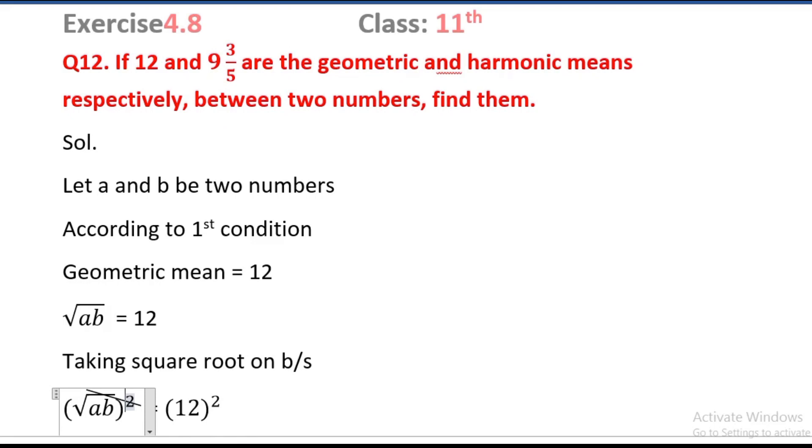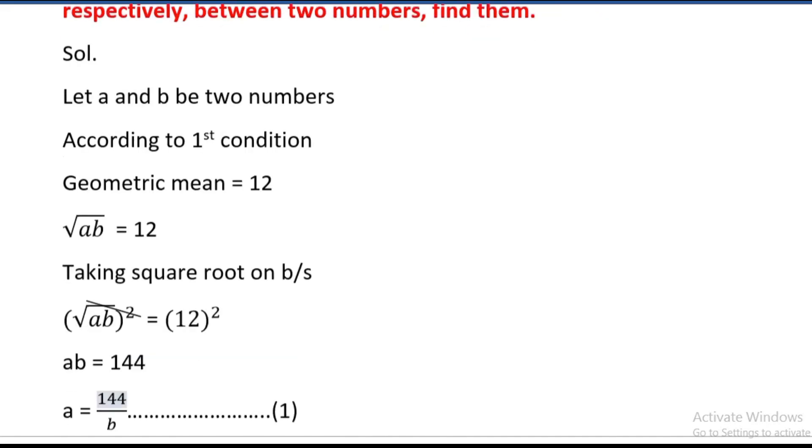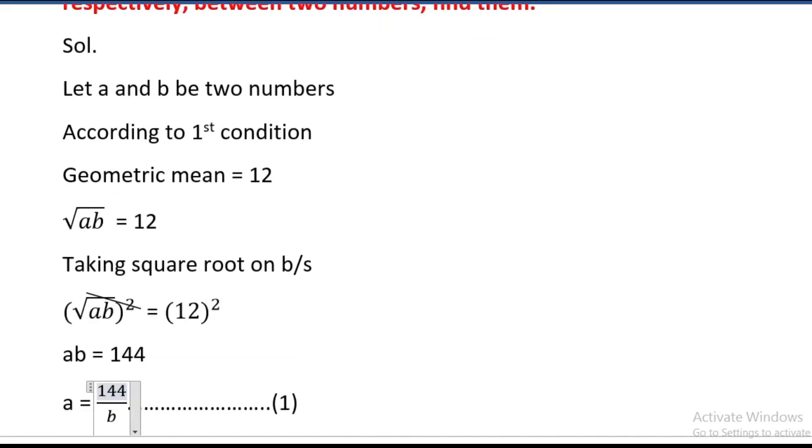Square root cancels, ab equals 12 squared, which equals 144. So ab equals 144. Dividing by b on both sides, a equals 144 divided by b. That is equation 1.